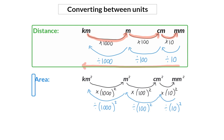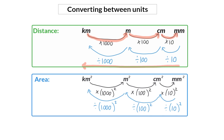We also had a look at converting areas. An area is measured in any unit squared, and that means all the values we had for distances will now have to be squared when converting area. So changing from square kilometers to square meters, you multiply by a thousand to the power of two, which means you multiply by a million, or six zeros. The same goes when converting to centimeters squared and millimeters squared.